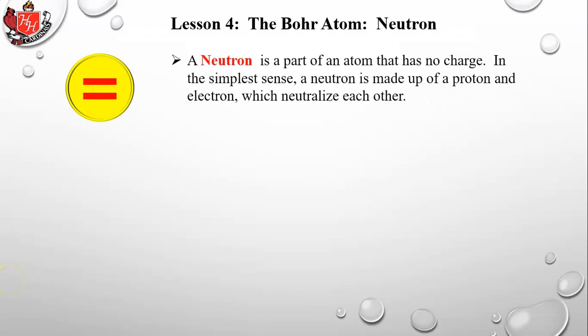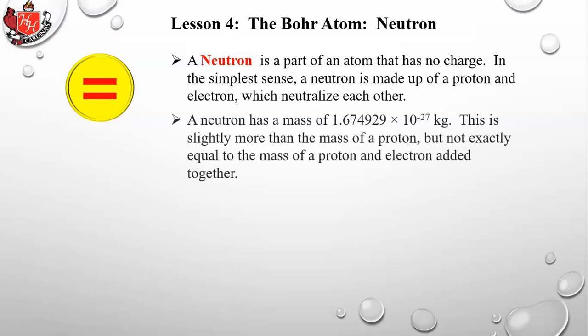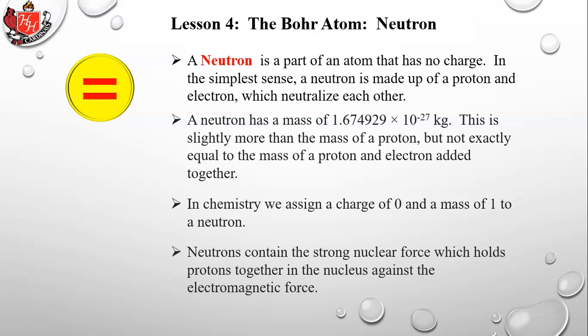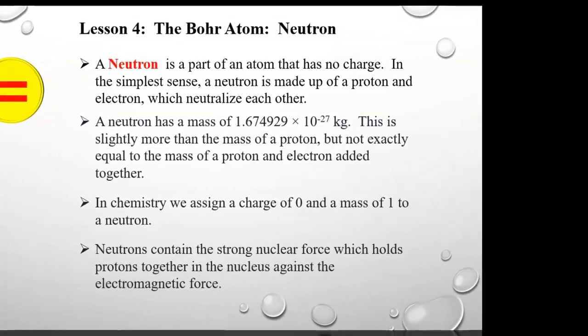A neutron is a part of an atom that has no charge. In the simplest sense, a neutron is made up of a proton and an electron whose charges neutralize each other. Its mass is slightly more than a proton's. In chemistry we assign it a charge of zero and a mass of one. Neutrons contain the strong nuclear force, which holds protons together in the nucleus.